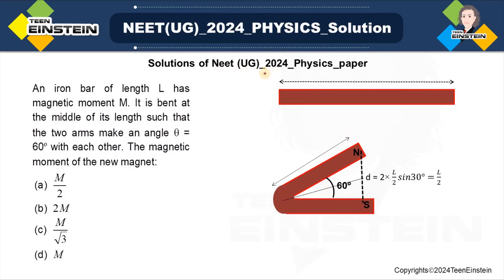Here, I'm going to discuss a question from NEET UG paper 2024. The question says, if there is an iron bar of length L has magnetic moment M. It is bent at the middle of its length such that the two arms make an angle theta equals 60 degrees with each other. Then you have to find out the magnetic moment of the new magnet.